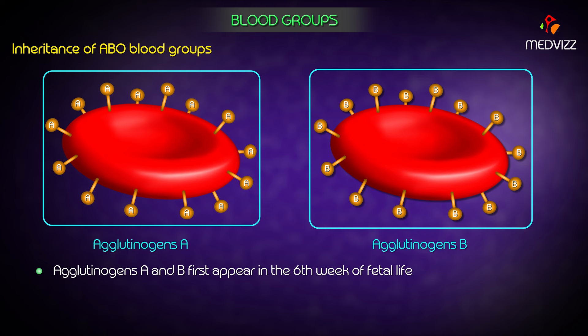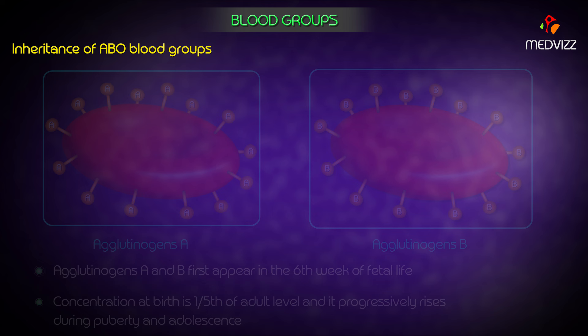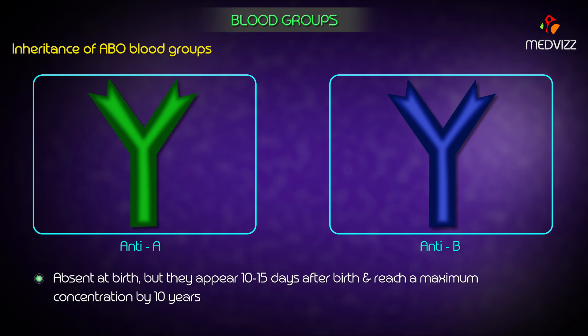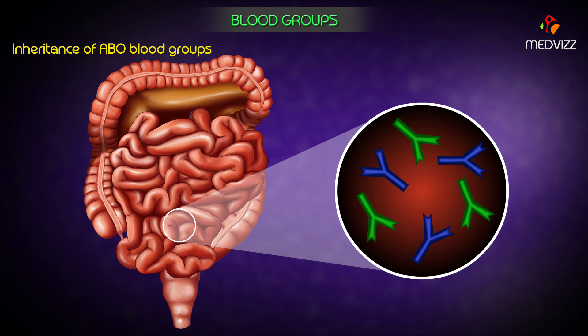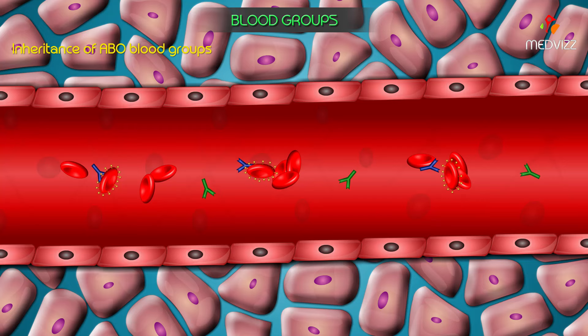Agglutinogens A and B first appear in the sixth week of life. Their concentration at birth is one-fifth of adult level and progressively rises during puberty and adolescence. Anti-A and anti-B agglutinins are absent at birth but appear 10 to 15 days after birth, reaching maximum concentration by age 10. Antigens similar to A and B are present in intestinal bacteria and food; when the newborn is exposed to these, antibodies are formed against them.